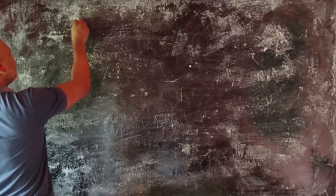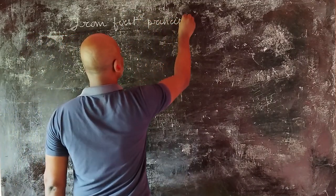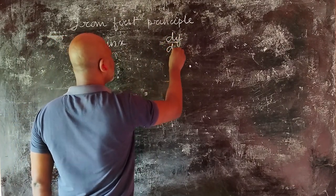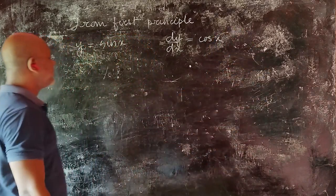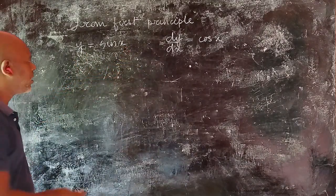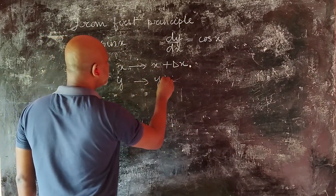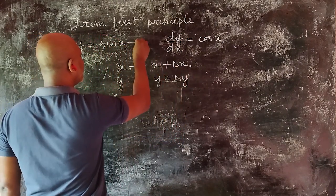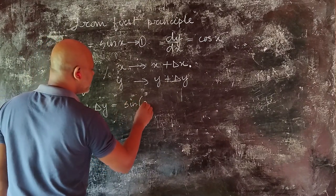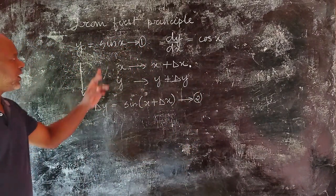So from the first principle, if y is equal to sin x, then y is a function of x. If x changes to x plus delta x, then y changes to y plus delta y. This gives us equation 1: y equals sin x. Now equation 2: y plus delta y is equal to sin of x plus delta x.